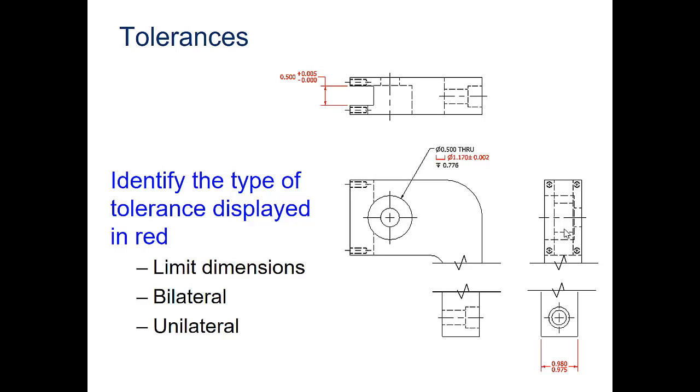Identify the type of tolerance displayed in red. The top one would be unilateral, this only has a plus, there is no minus on that one. This one in the middle would be bilateral, it has plus or minus .002. And then the dimension on the bottom is limit, because they're giving you the upper and the lower limit for that dimension.